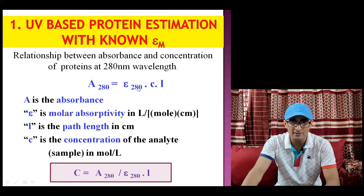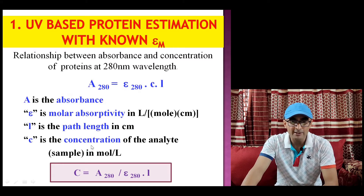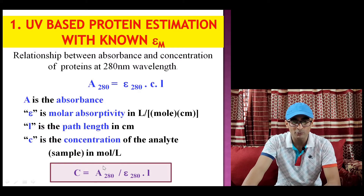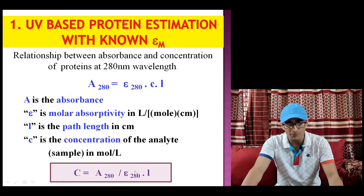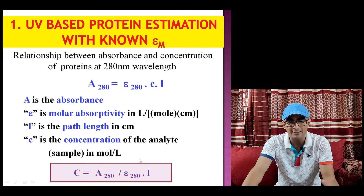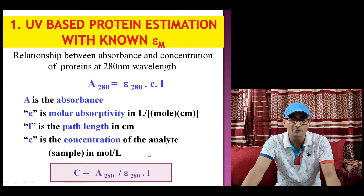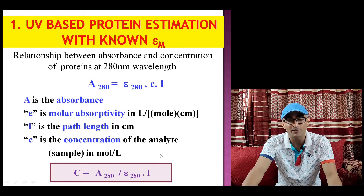From this formula, if the molar extinction coefficient of a protein at 280 nanometer is available, concentration can be calculated. You divide the absorbance by the extinction coefficient of the protein multiplied by the path length, which is generally one centimeter in most spectrophotometers. So concentration can be calculated just by taking absorbance of the sample, but this applies when the extinction coefficient of the protein is known.